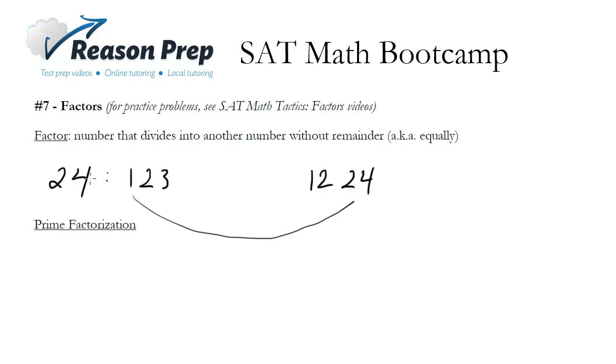3 can go in, 3 goes into 24 8 times, so 8 is a factor. And 4 goes into 24 6 times. And that looks to be it. So got a little gap here, you can kind of ignore it. But our factors are 1, 2, 3, 4, 6, 8, 12, and 24. Those are the total numbers of factors for this particular number.